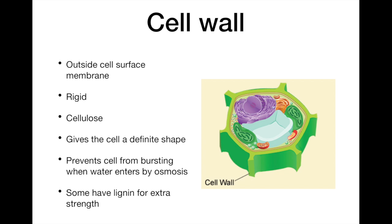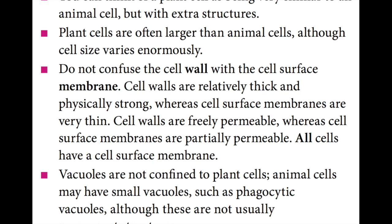First, we're going to talk about the cell wall, the component missing from animal cells. Plant cells are surrounded by a cell wall which is outside the cell surface membrane, meaning outside the plasma membrane. This cell wall is not, we can't confuse it with the cell surface membrane.